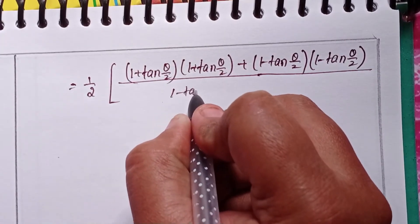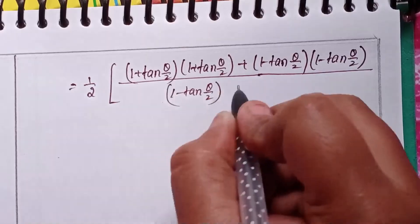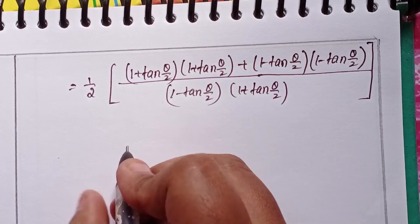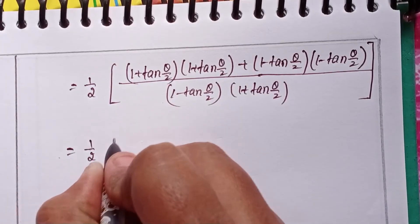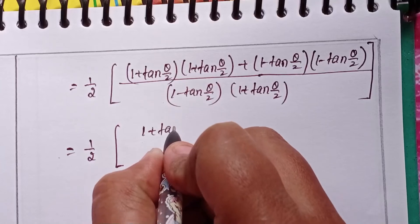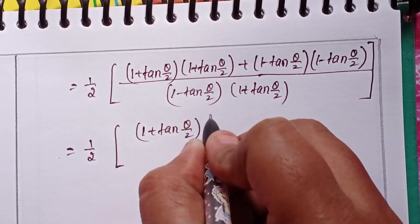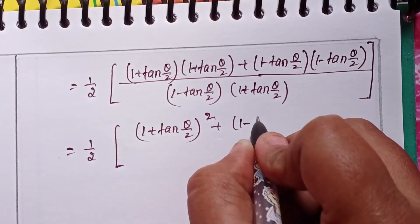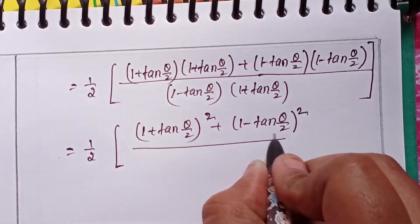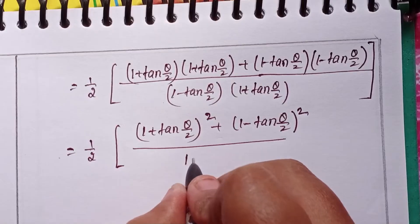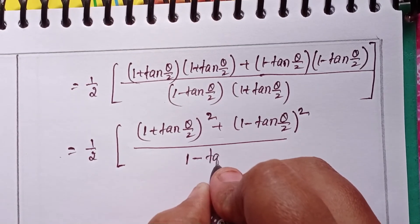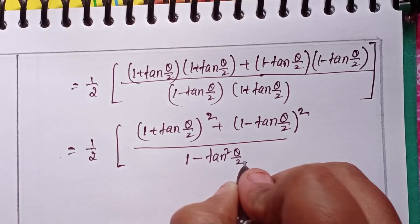Applying the (a + b)(a − b) formula in the denominator gives a² − b², which means 1 − tan²(θ/2). The numerator becomes (1 + tan(θ/2))² plus (1 − tan(θ/2))².